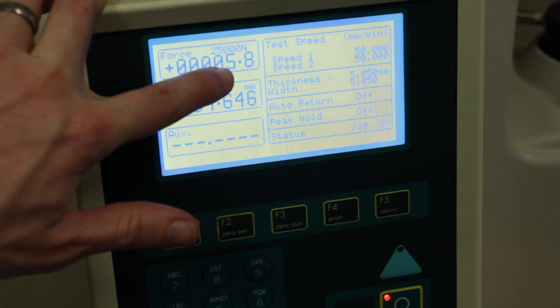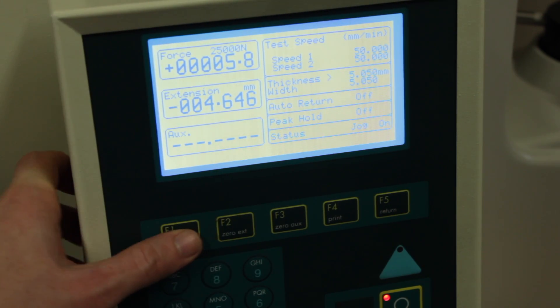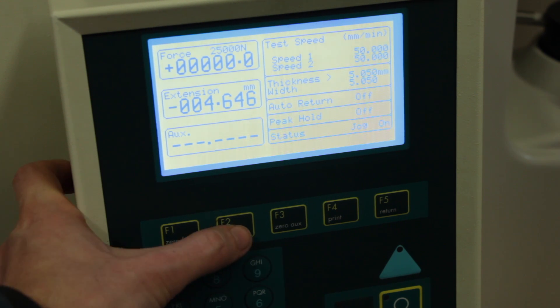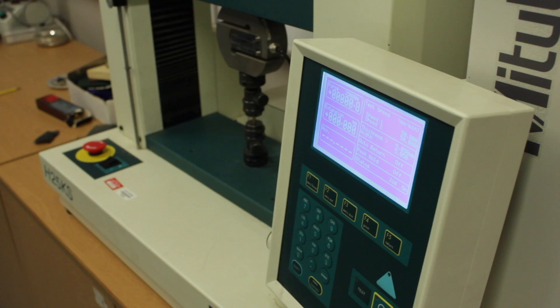Next, we need to reset the force and extension by pressing F1 and F2. Then we'll hit 6 to enter the full graphing mode.